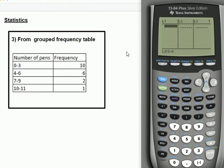In L1, you need to put in the numbers of pens, but you can't put in 0 to 3. These 10 people could have all had no pens or all had 3 pens. Most likely some had no pens, some had 1, some had 2, some had 3. The only sensible assumption is to assume they're all in the middle, so the midpoint of 0 and 3 is 1.5, because 0 plus 3 is 3, and 3 divided by 2 is 1.5.